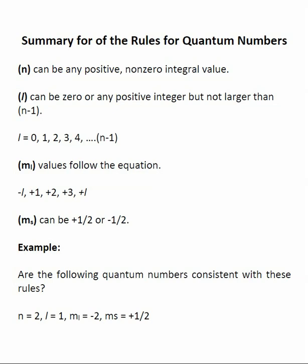Let's run down the rules for quantum numbers one more time, and then we are going to apply them in a very classical type of question that you might see on an exam. There are four quantum numbers. The first one, n, can be any positive non-zero integer value: one, two, three, four.